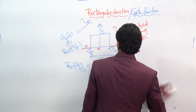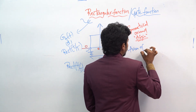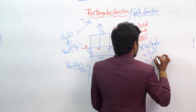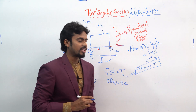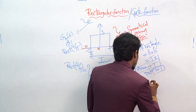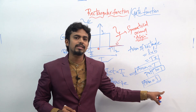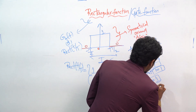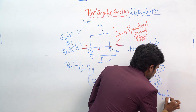If you want to find the area of this rectangle using the formula length times breadth, the area will be T cross 1, so area equals T. If you substitute T equal to 1, the area becomes 1. Whenever the area equals 1, this rectangular function becomes the unit rectangular function.